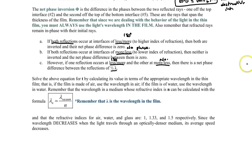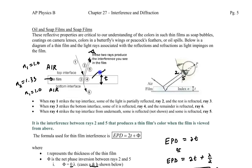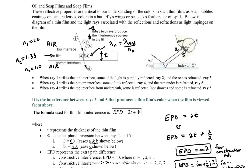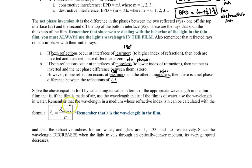One other important aspect: the extra path difference occurs within the medium itself, so we must use the wavelength within the medium. The wavelength in the medium is λ_n = λ_air / n₂, the index of refraction of the middle layer. So when using mλ or (m + ½)λ, use λ_n — the wavelength within the film — since λ_vacuum ≈ λ_air.